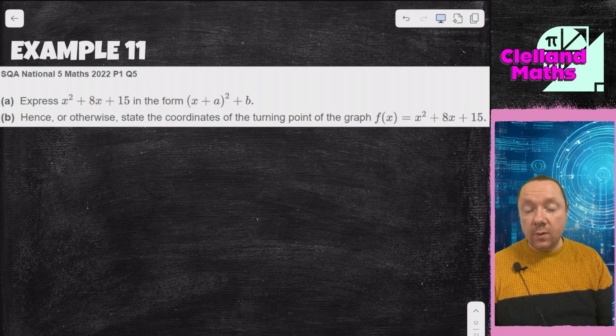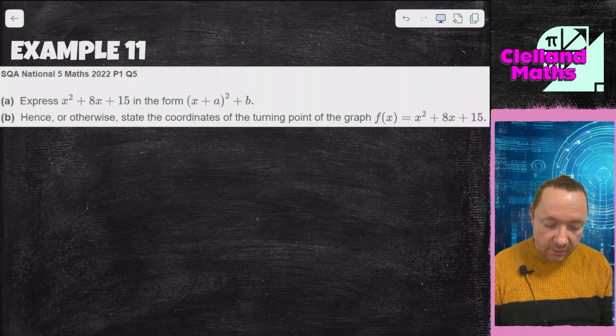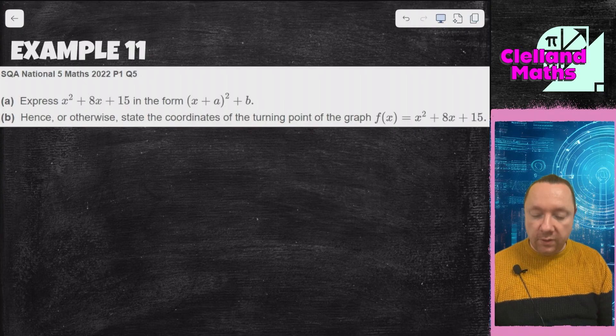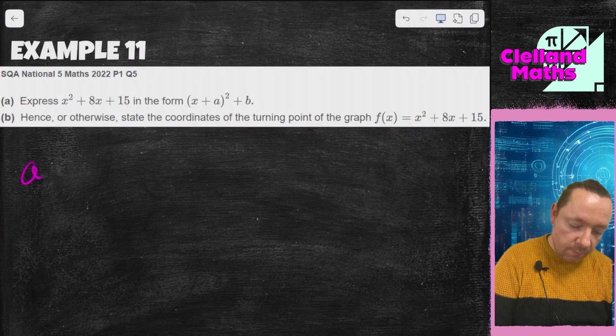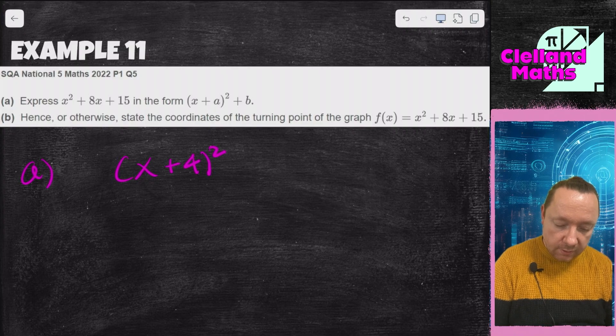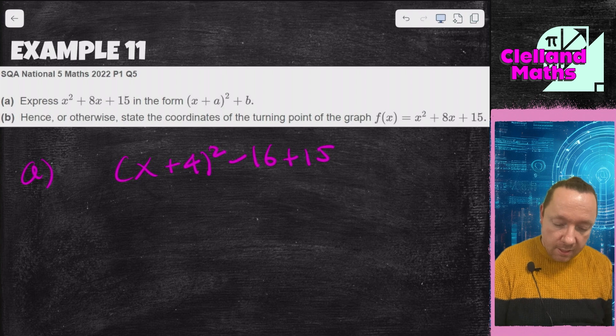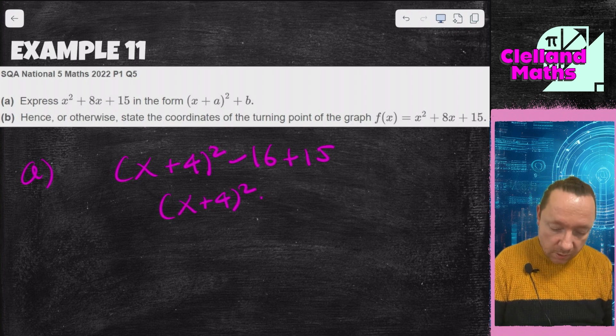Example 11, National Five Maths 2022 paper 1 question 5. Express it in the form x plus a squared, and hence state the turning point of the graph. Part a, x plus 4 all squared. I need to take away 16 straight away, but I've got plus 15. So that's x plus 4 all squared, 15 minus 16 is minus 1.